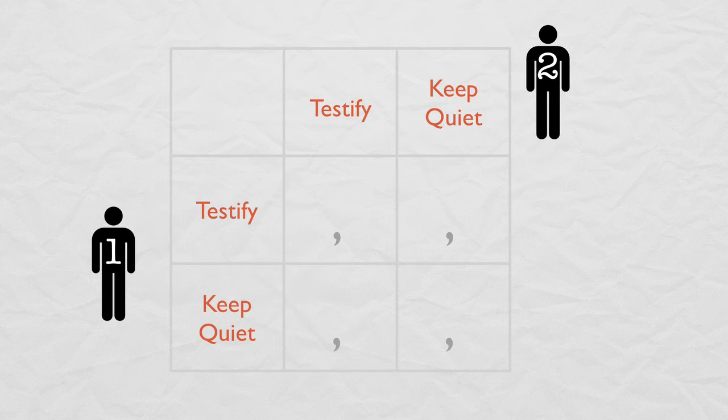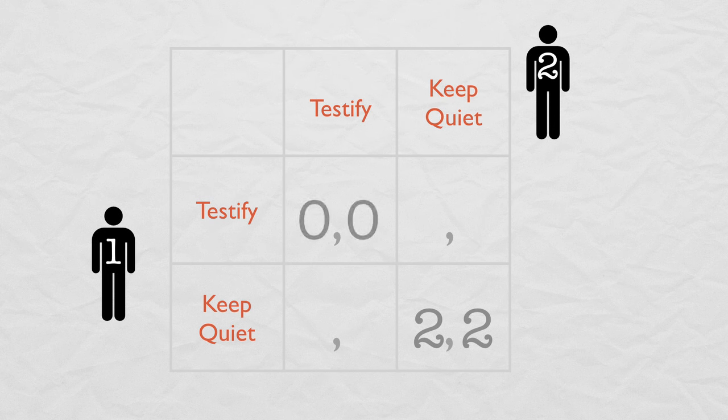If they both keep quiet, they both get off with a light sentence, which I'll represent with a payoff of 2. Prisoner 1's payoff is on the left, Prisoner 2's is on the right. If they both testify, they both get a moderate sentence. I'll represent the moderate sentence by a payoff of 0.